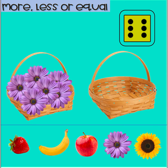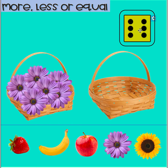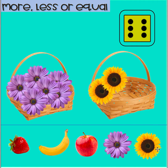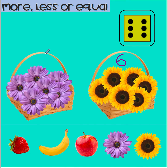Now let's roll another dice to find out how many sunflowers we need to put in the next basket. Let me roll the dice. What number is that? Six again! Wow. Let's count: one, two, three, four, five, six. Six sunflowers. And in this basket we have six daisies.